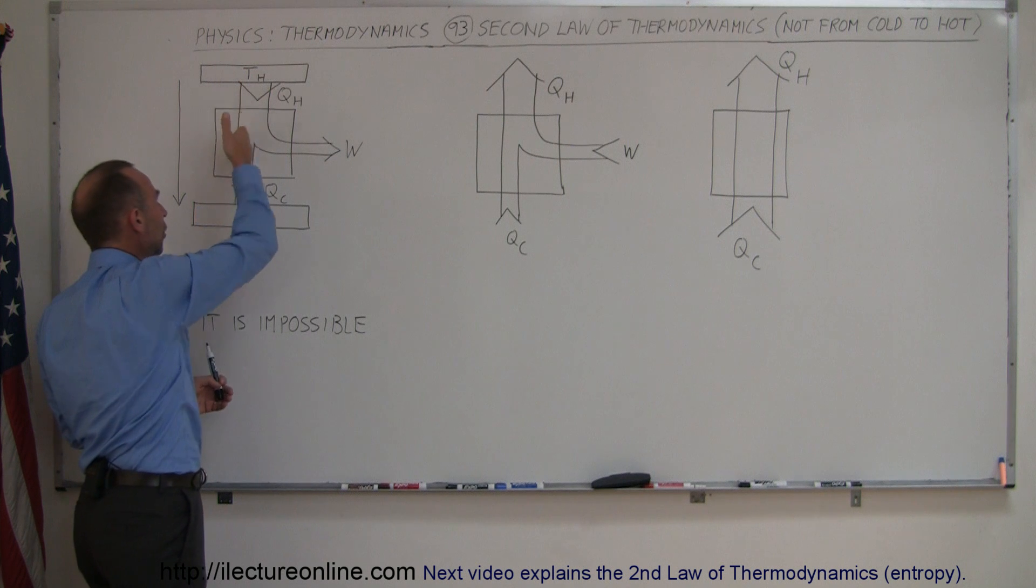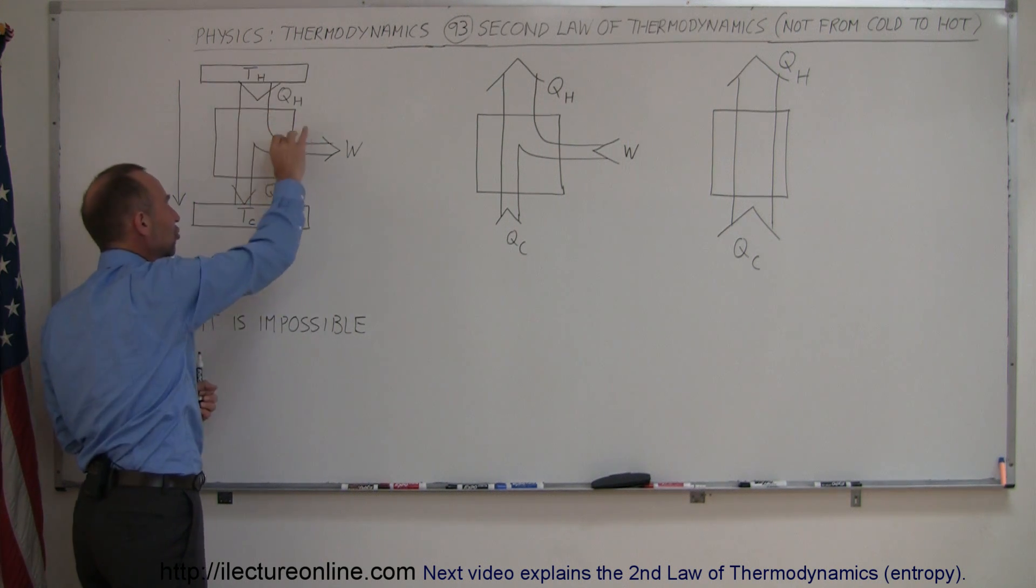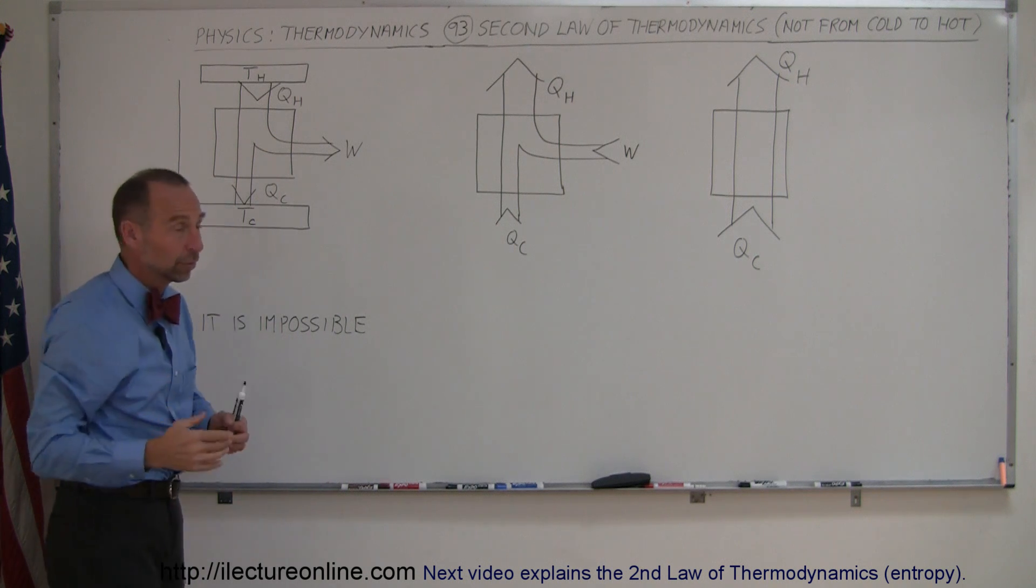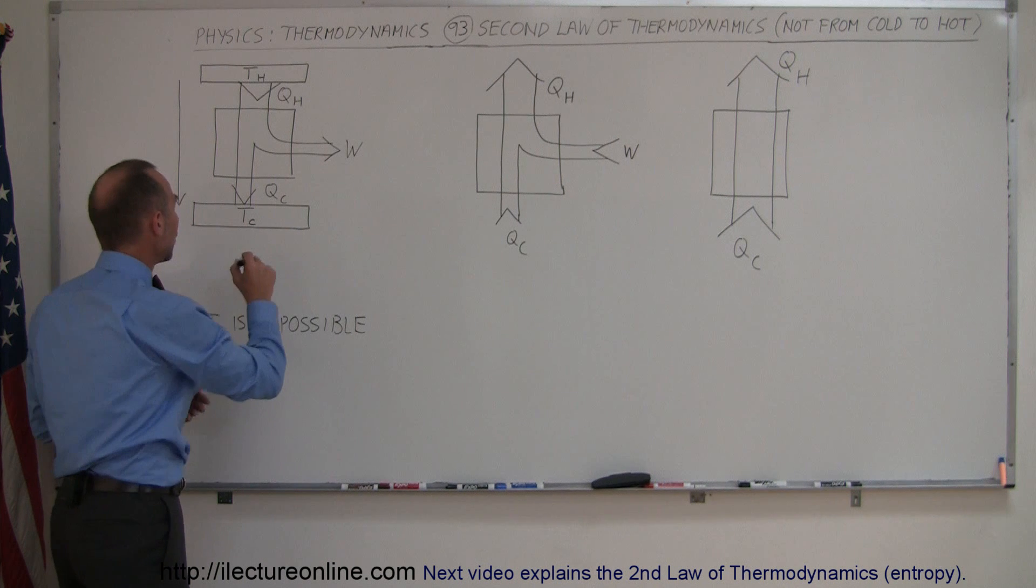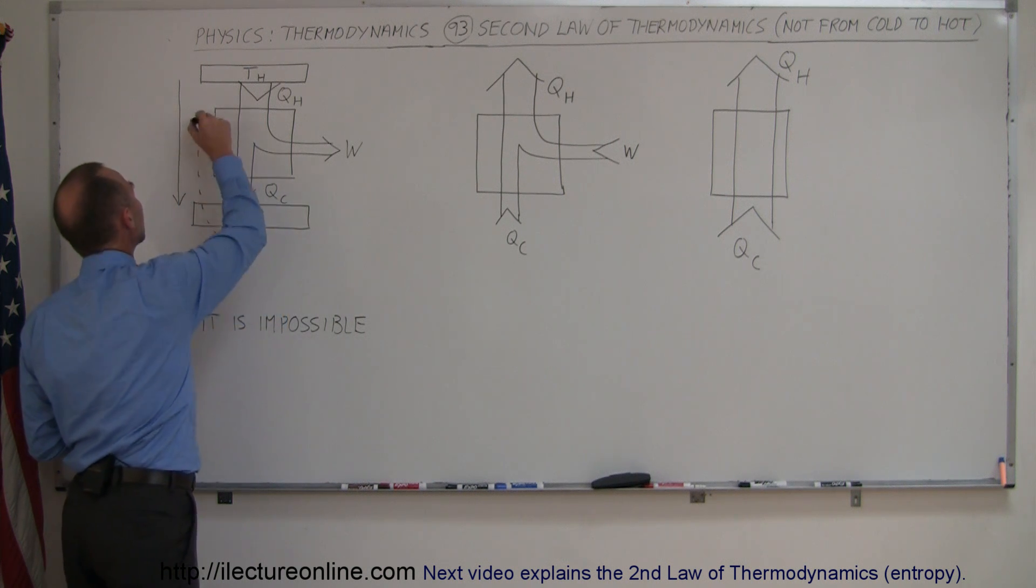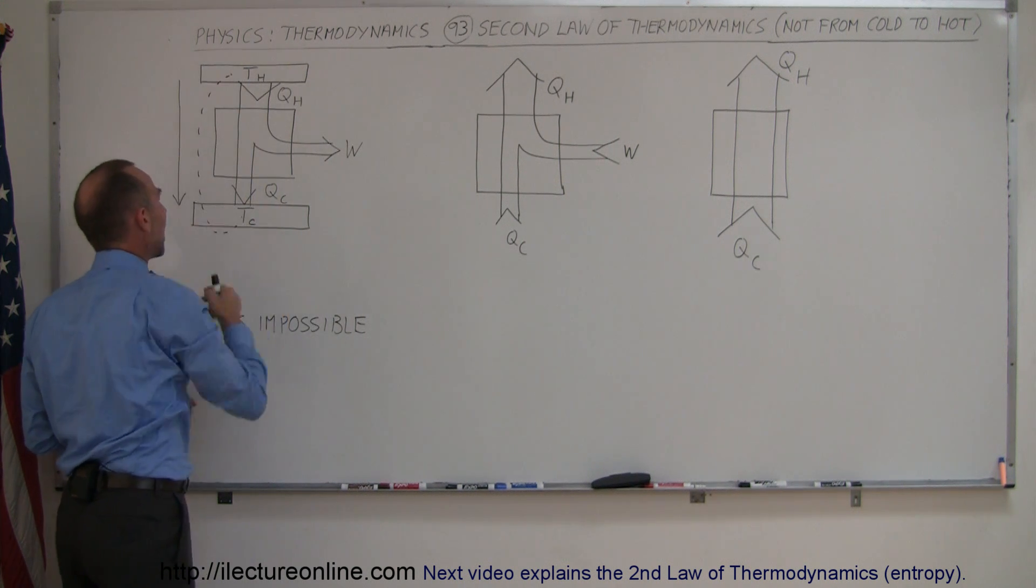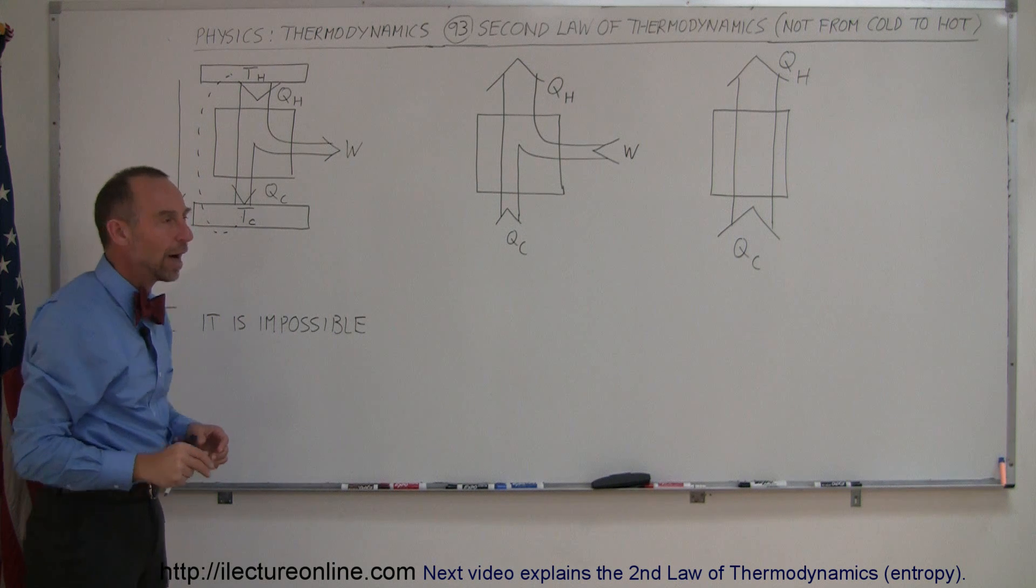So once the heat flow has completed and heat has flown from hot to cold, and we extracted some of that heat flow and converted it to work, once it reaches the cold reservoir, we're not able to get it to go the other direction. It always goes from hot to cold, never from cold to hot.